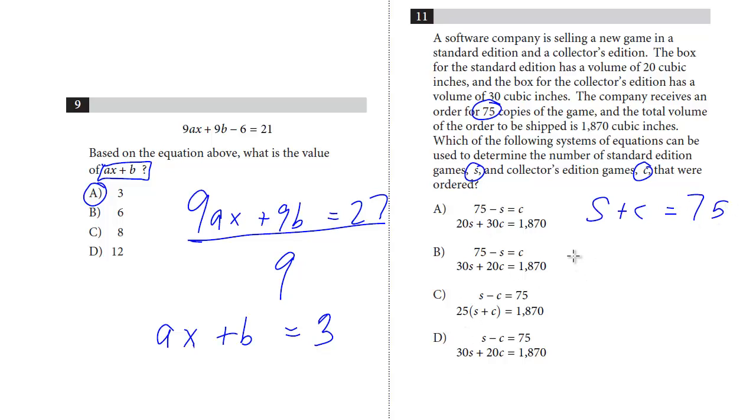Now, we don't see that as a choice. But we can rearrange this. This has 75 minus S. So if we isolate, we solve for C. We can just subtract S. We get C equals 75 minus S. And that's what this first equation has, the second one as well. These two would definitely work.